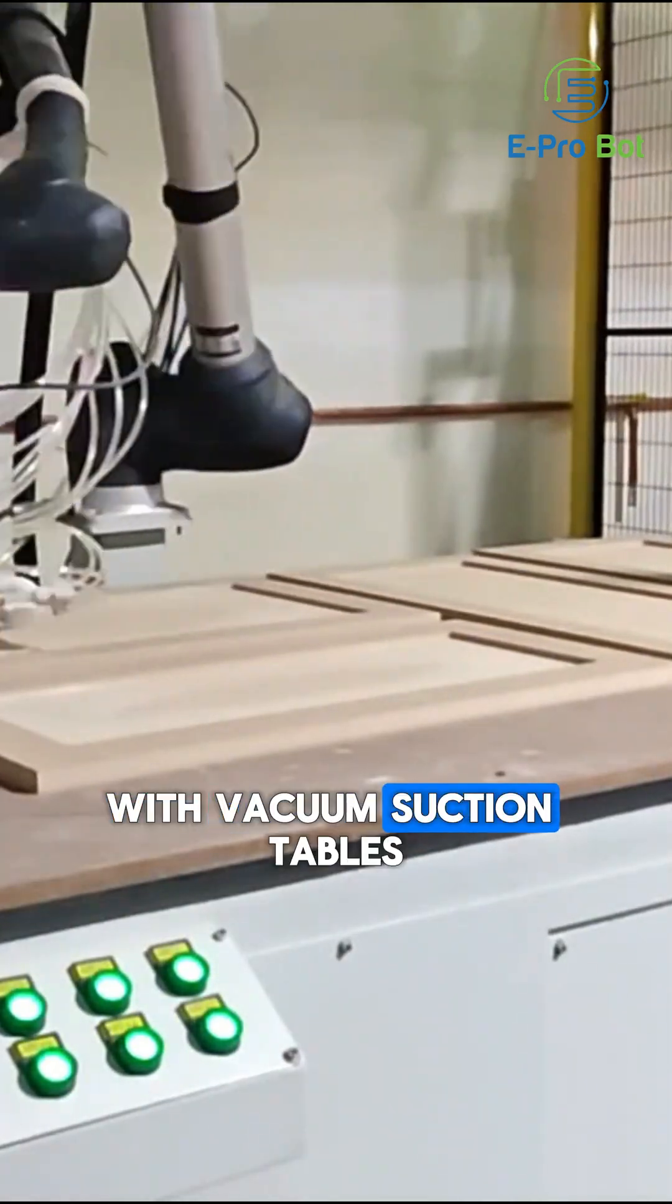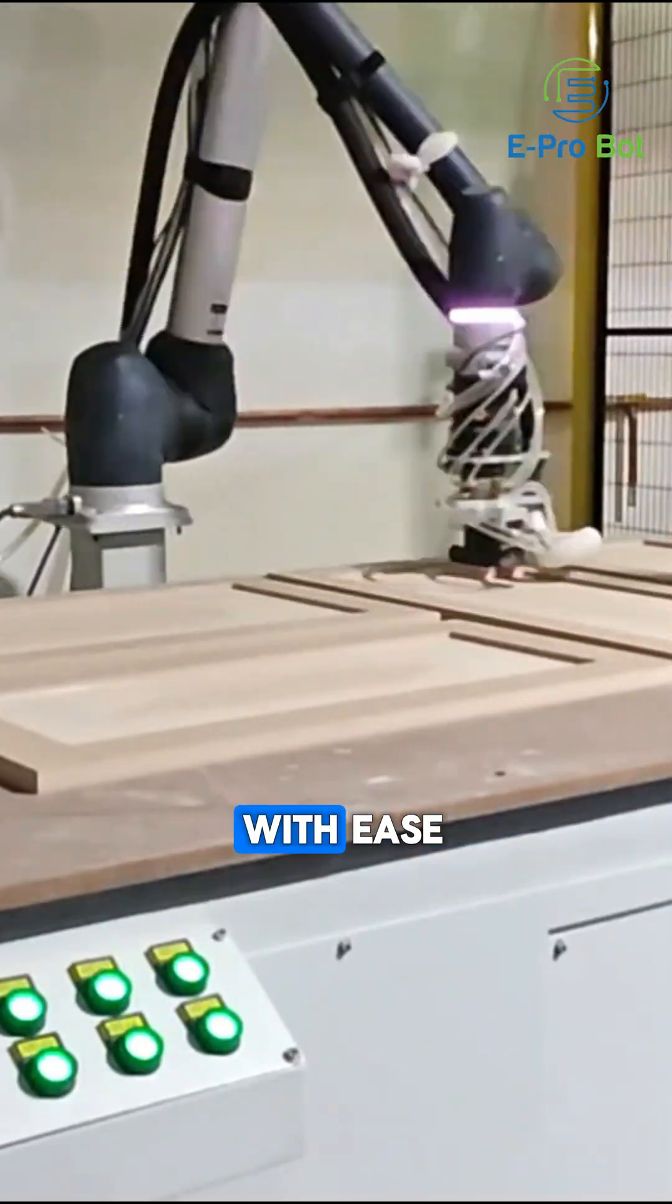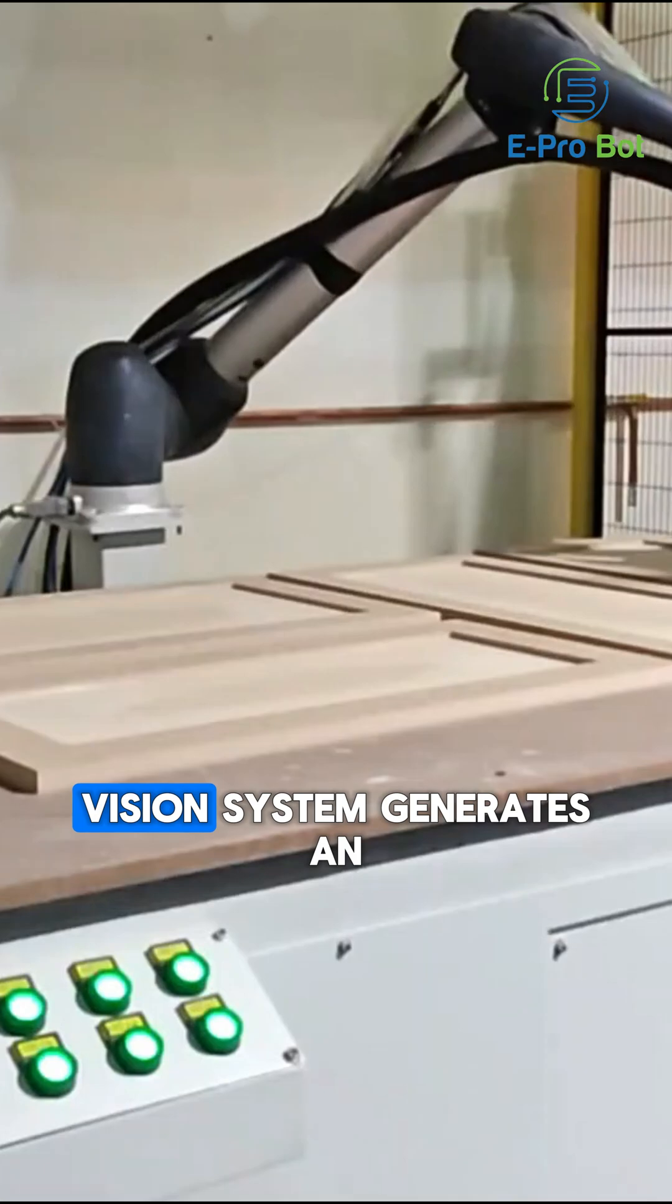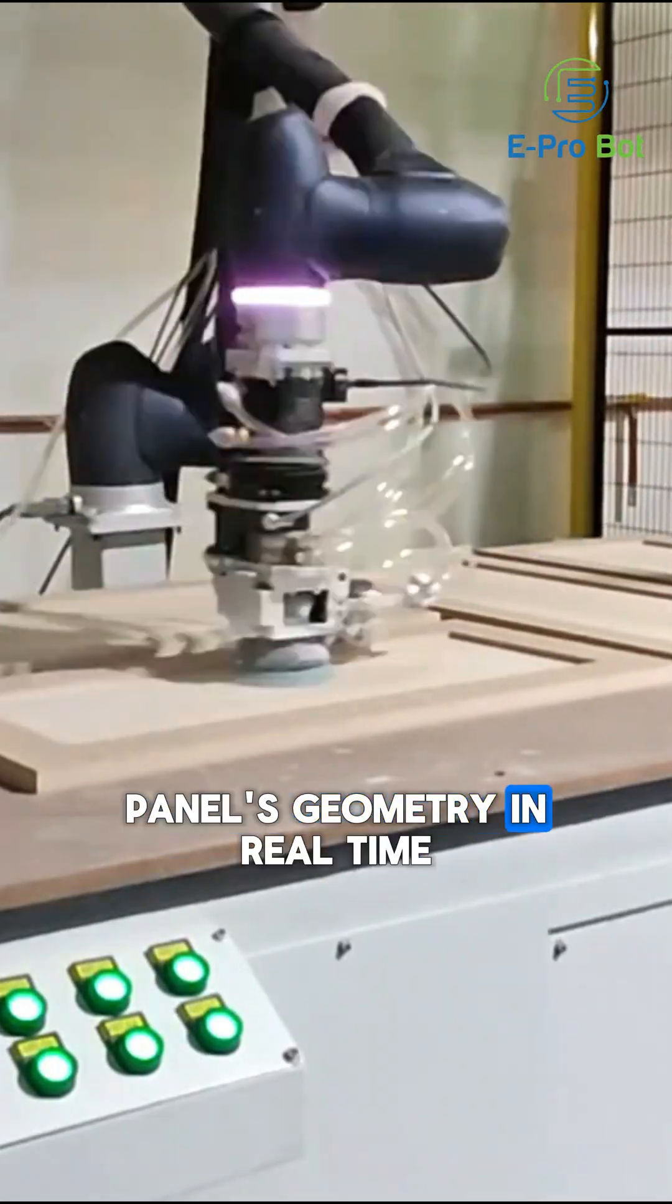With vacuum suction tables, it handles random placement and different panel sizes with ease. A 3D AI laser vision system generates an ultra-accurate point cloud of each panel's geometry in real time.